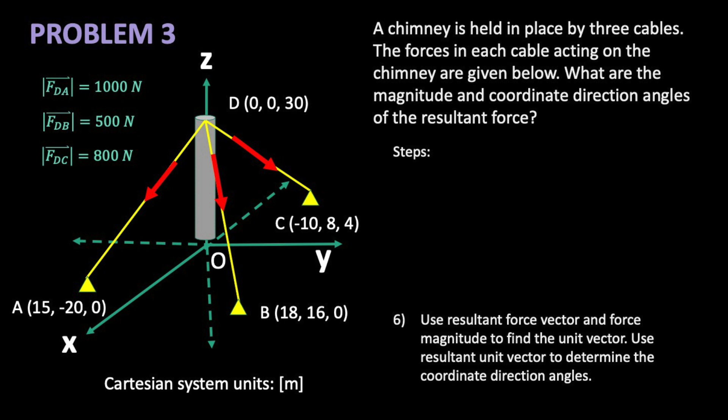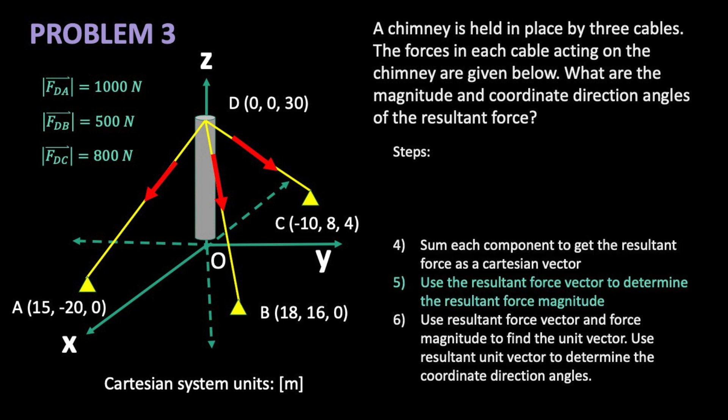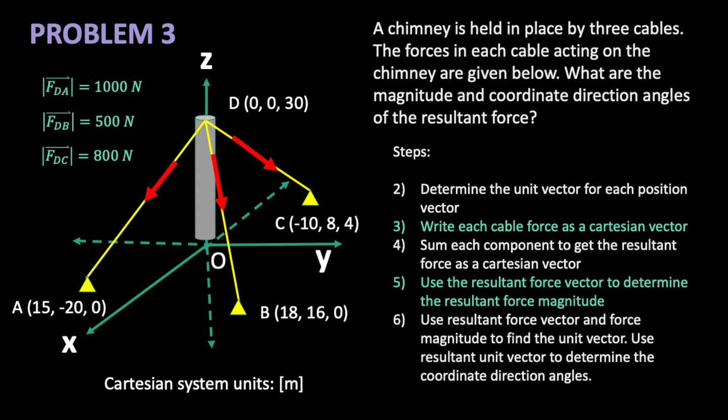Let's think backward. To get our coordinate direction angles, we'll want to use the unit vector of our resultant. To get that, we'll need our resultant force magnitude and our resultant force vector. To get our resultant force vector, we first need to get each cable force as a cartesian force vector. And to do that, we would first need to describe the direction of each cable with a unit vector. To get our unit vectors, we would first need the position vectors for each cable. Got it? Try it on your own first, then follow along.